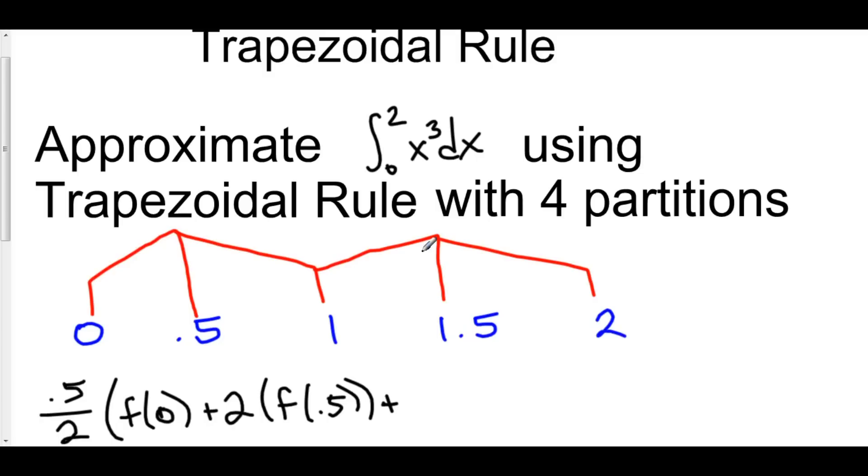1.5 is also an interior trapezoidal column. So we have 2 times f of 1.5.